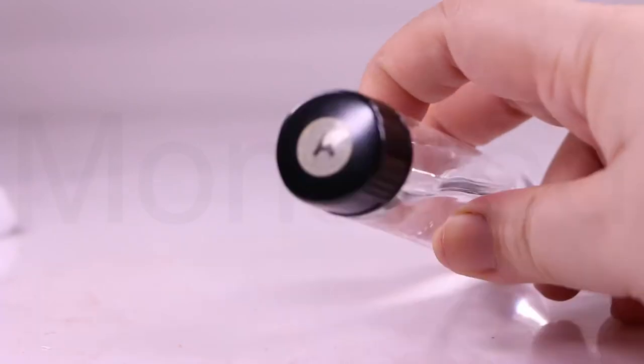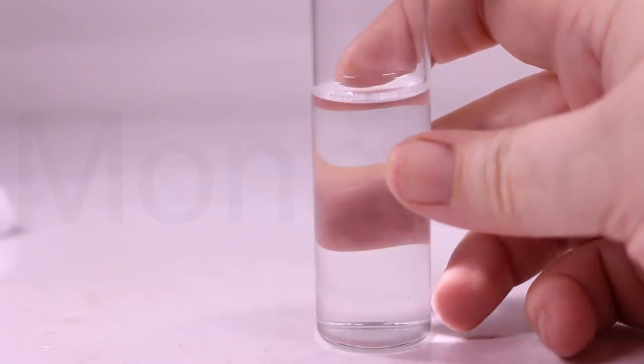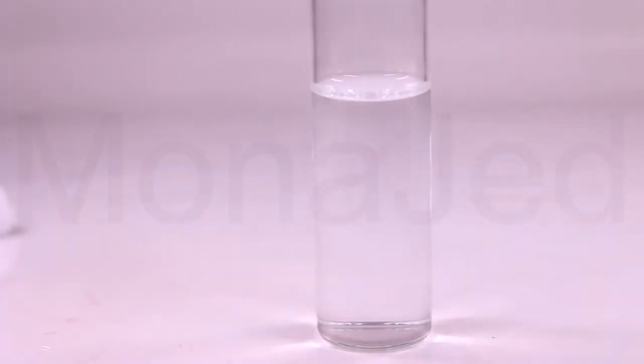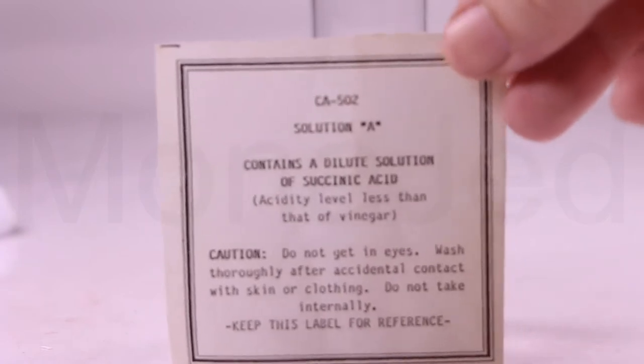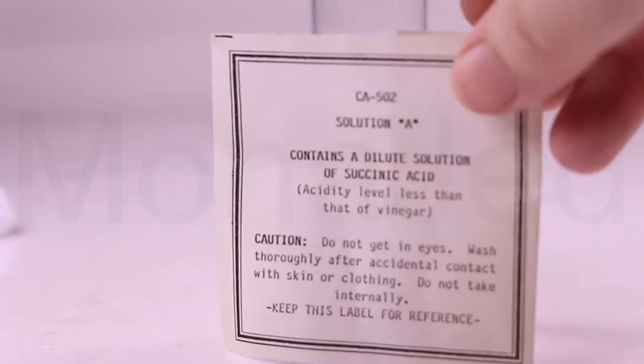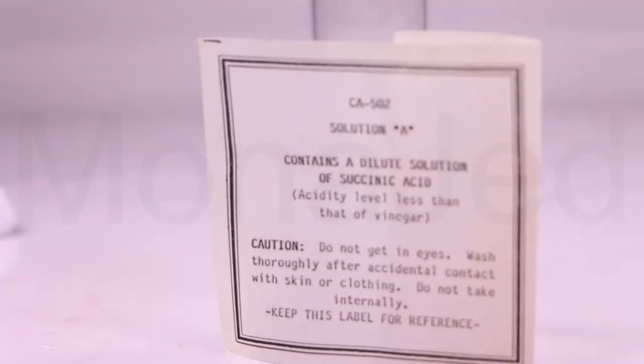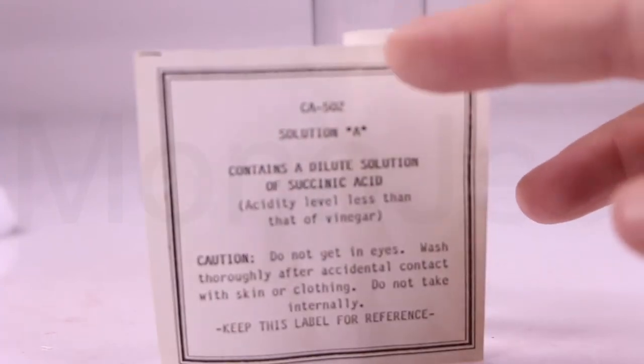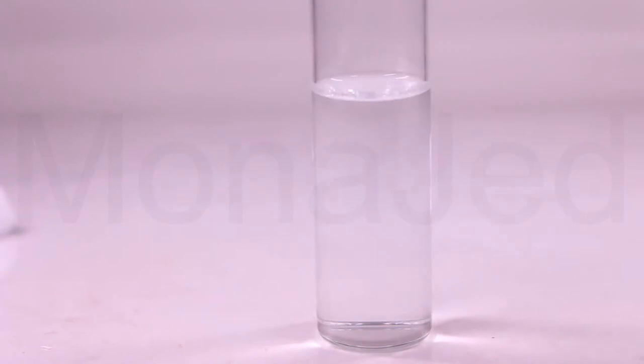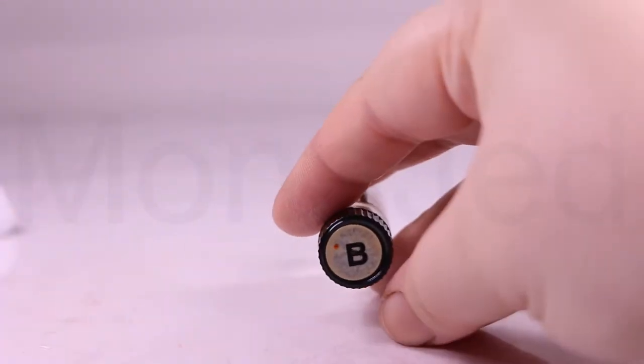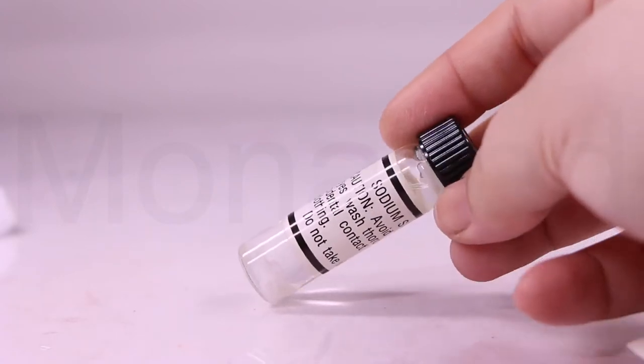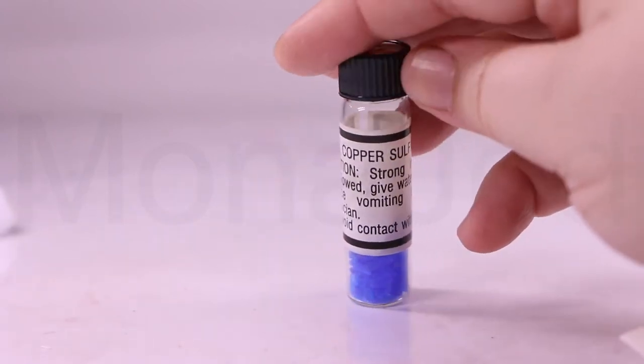So, this is vial A solution A, contains a dilute solution of succinic acid, acidity level less than that of vinegar. Please be cautious, do not get in eyes, wash thoroughly after accidental contact with skin or clothing, do not take internally. Keep this label for reference. Vial B contains sodium silicate crystals, vial C contains brilliant blue copper sulfate crystals.